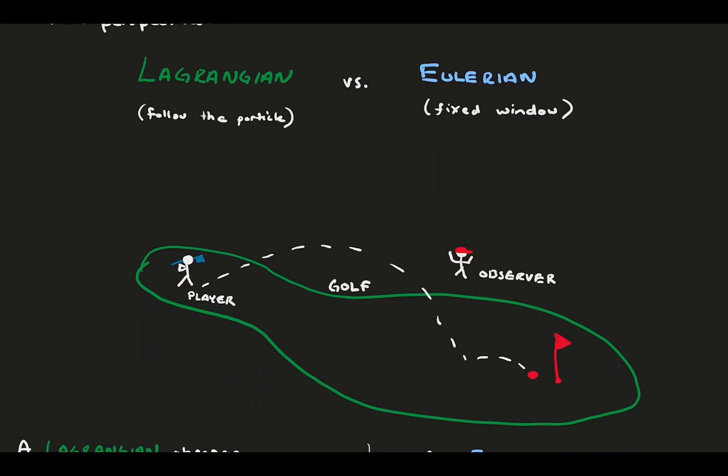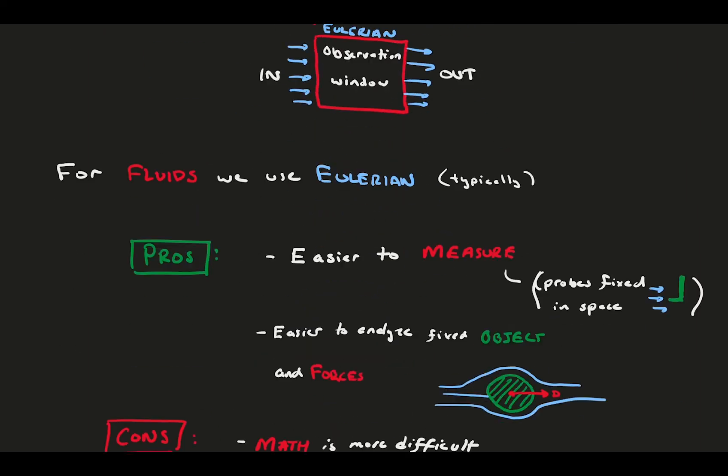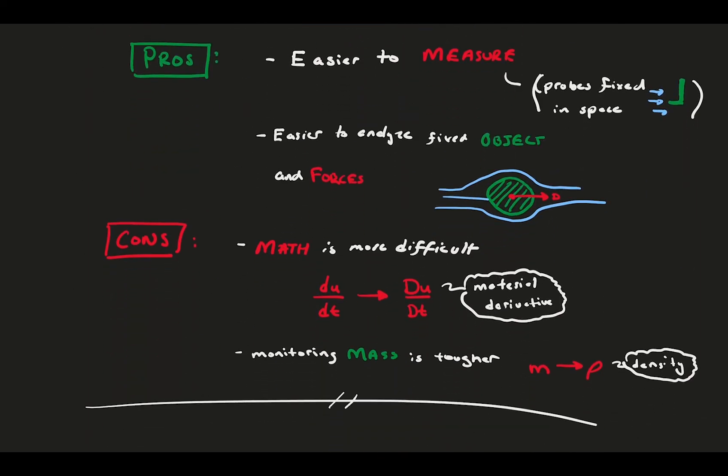Lastly, we consider how we best observe a moving fluid, where we have the option to follow the particle with the Lagrangian approach or watch particles go by with the Eulerian approach. Generally, we take Eulerian's perspective. And that's it. Now, we should be ready to jump into the conservation equations of fluid motions and dig into what really governs how fluids move.